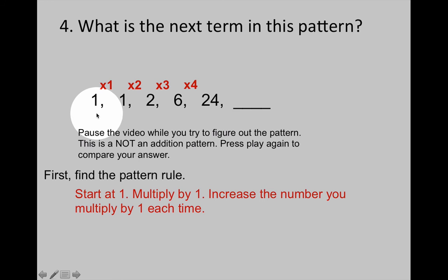So our pattern rule is to start at 1, multiply by 1, and increase the number you multiply by 1 each time. So 1 plus 1 is 2. 2 plus 1 is 3. 3 plus 1 is 4. The next number we're going to need to do is multiply by 5. To extend the pattern. And the final answer is 120.